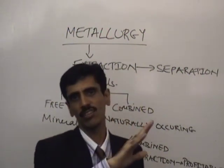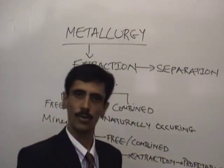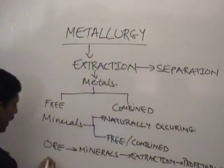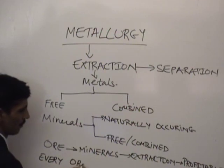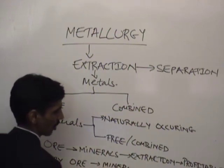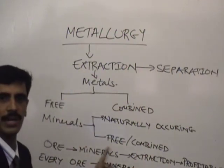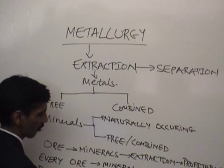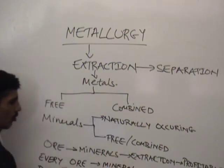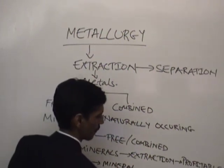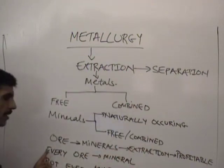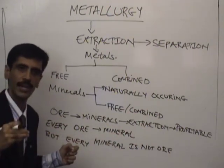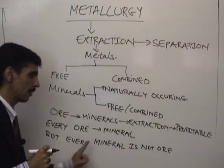So there is a possibility that a particular metal can have more than one ore. The difference between mineral and ore is clear — it is profit which plays a very important role. And that's the reason we write a very important statement: every ore is a mineral, because the definition of ore itself starts from mineral. Every ore is a mineral, but every mineral is not an ore, because it's not always possible to extract the metal from the mineral profitably.